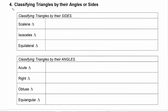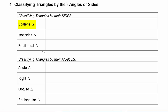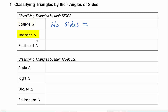Next let's review classifying triangles by their angles or sides. When we're classifying triangles by their sides there are three different types. The first is scalene, and when a triangle is scalene that means no sides are equal to each other — all three sides are different. In an isosceles triangle, two sides are equal. In an equilateral triangle, all three sides are equal.